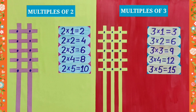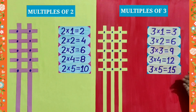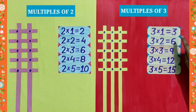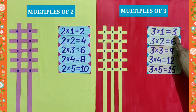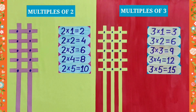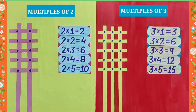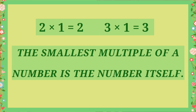And similarly, when we look at the multiples of 3, which is the smallest one? It is 3, which means that the smallest multiple of 3 is 3 itself. So, students, from these examples, we get to know that whether a number is small or large, the smallest multiple of a number is the number itself.